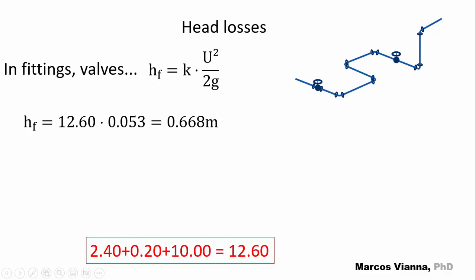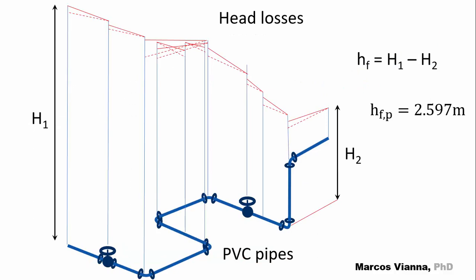So, the corresponding head losses will be 0.668 meters. In short, we'll have 2.597 meters in pipes, plus 0.668 meter minor losses, which leads to 3.265 meters of total head losses.